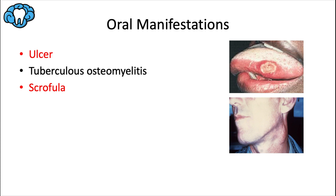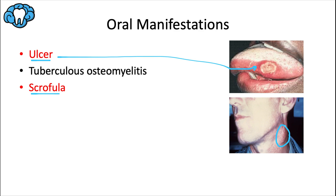Regarding oral manifestations, TB infrequently presents in the oral cavity. When it does, it's usually a painful deep ulcer, most often on the tongue, but it can also appear on the palate, lips, buccal mucosa, or gingiva. Extension into bone can cause tuberculous osteomyelitis, most often affecting the femur but very rarely the jaws. Scrofula refers to TB outside the lungs, usually presenting as inflamed and enlarged cervical or submandibular lymph nodes.